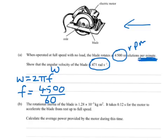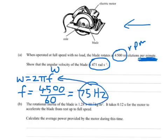That gives us 75 hertz, and then we substitute 75 hertz into our 2πf. And so 2π times 75 will give us an angular velocity of 471 radians per second.